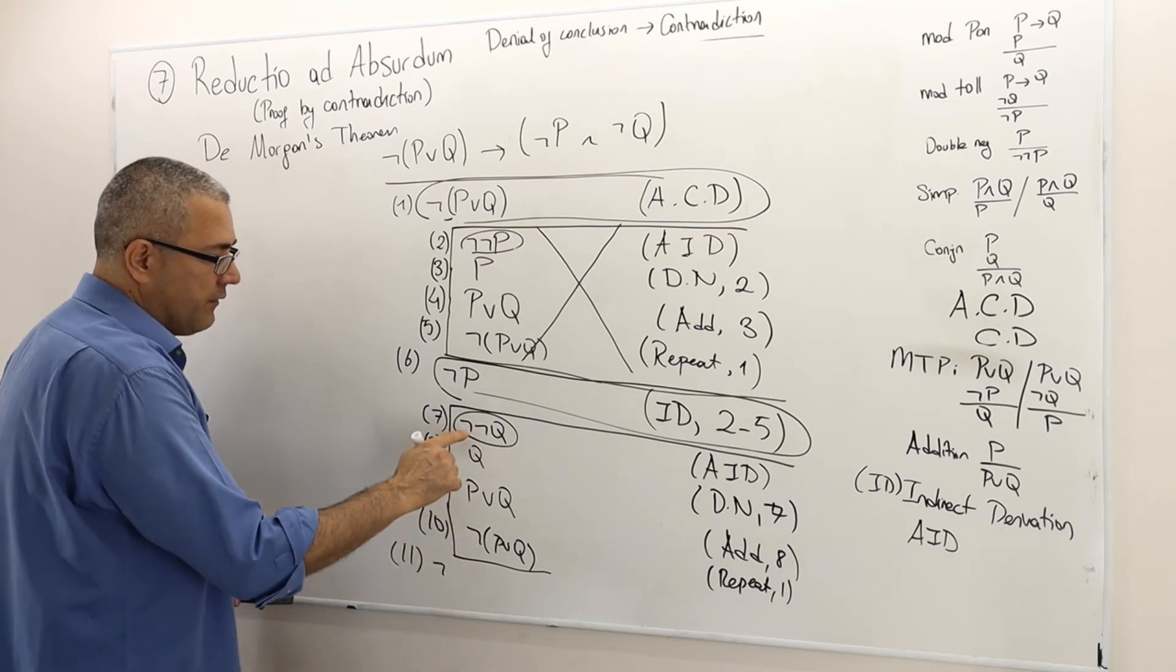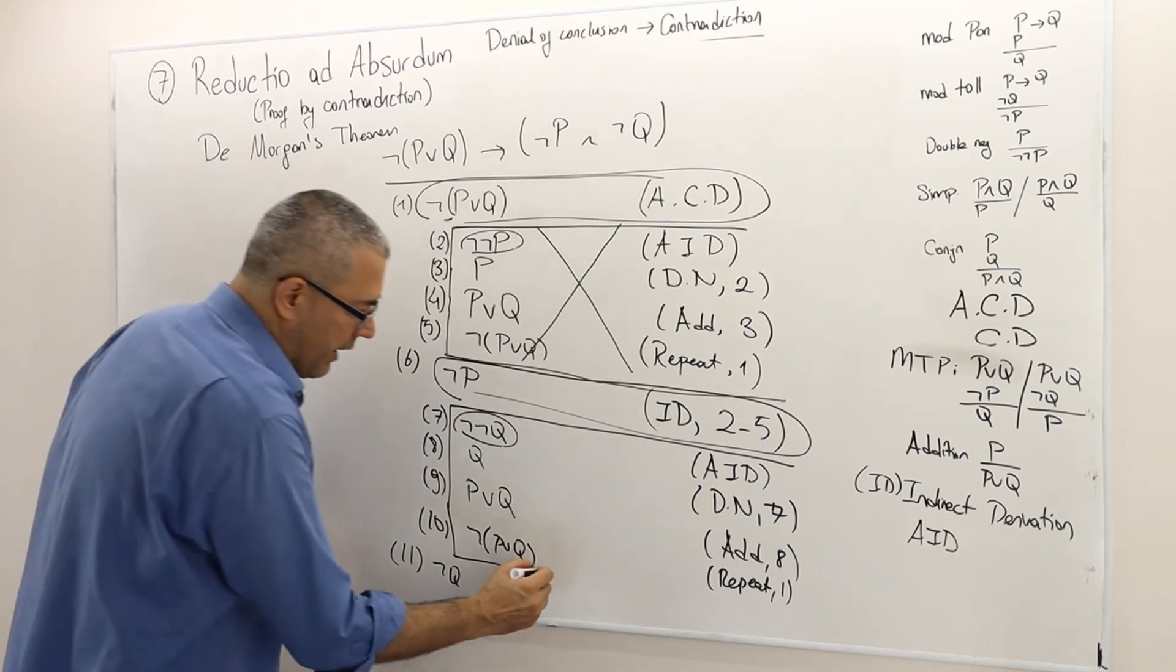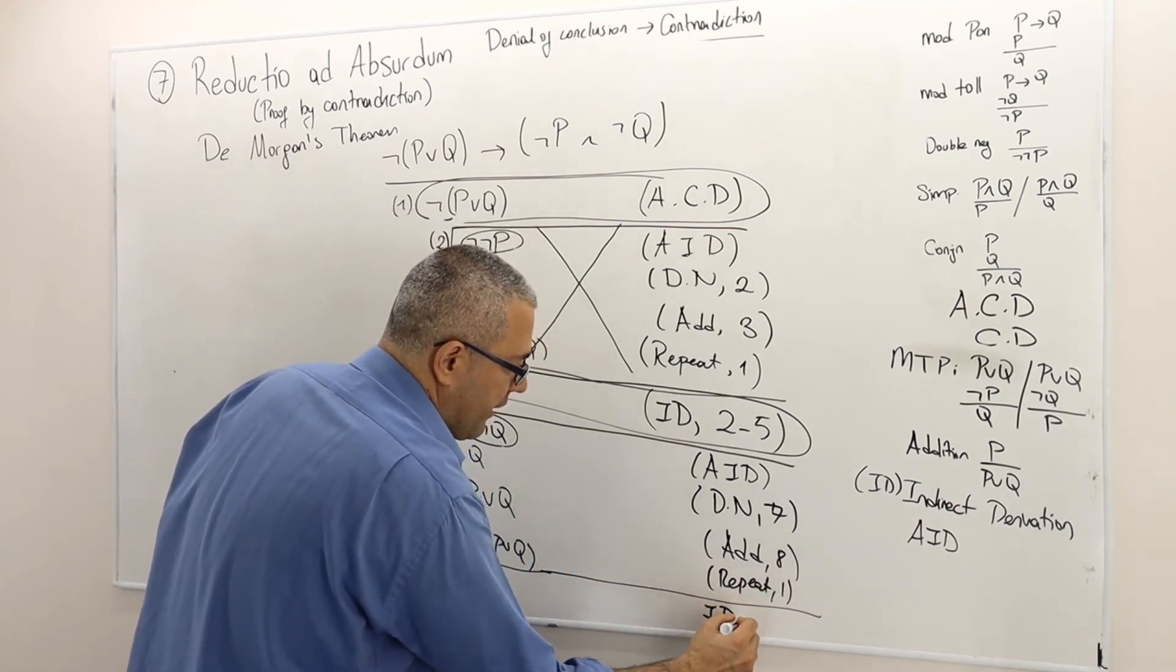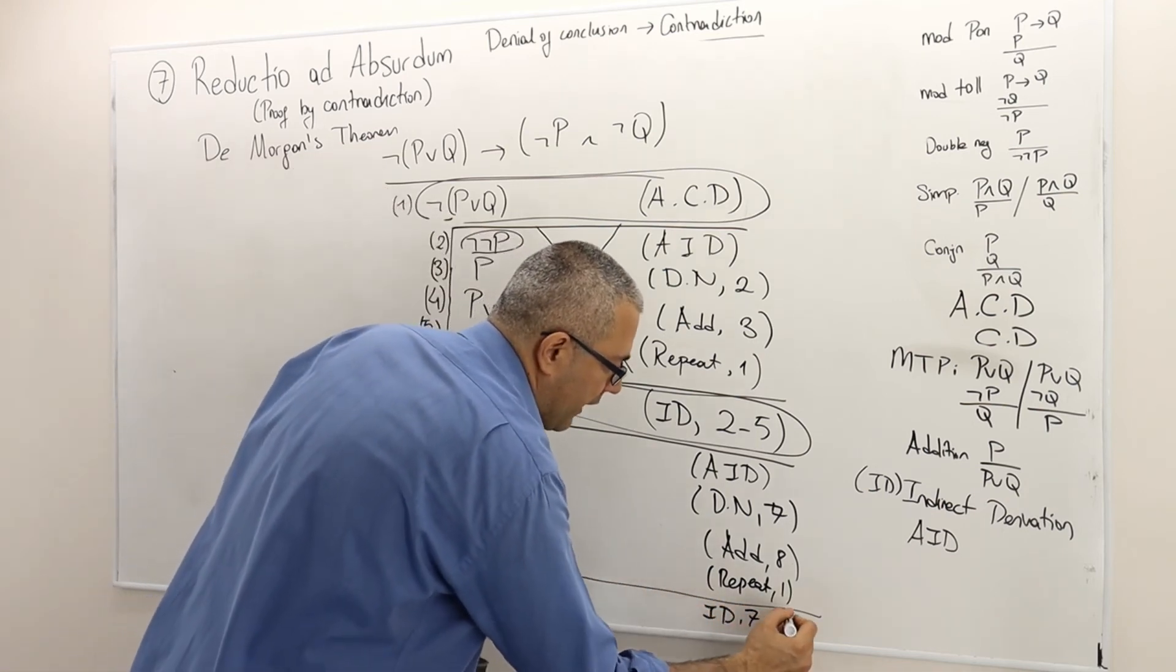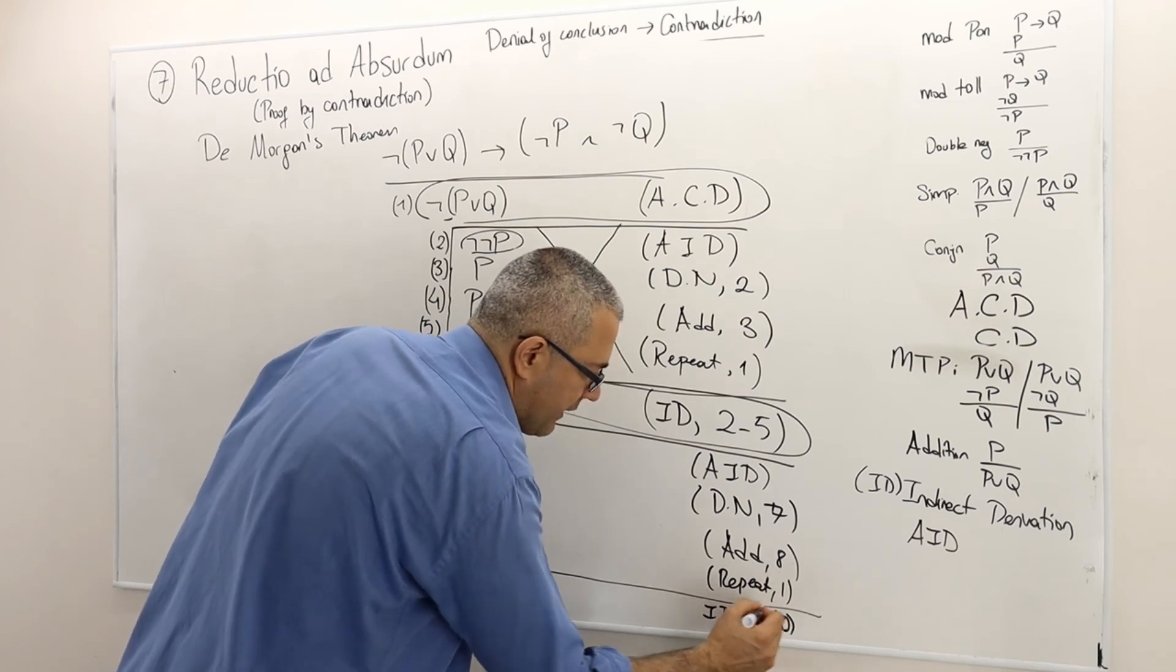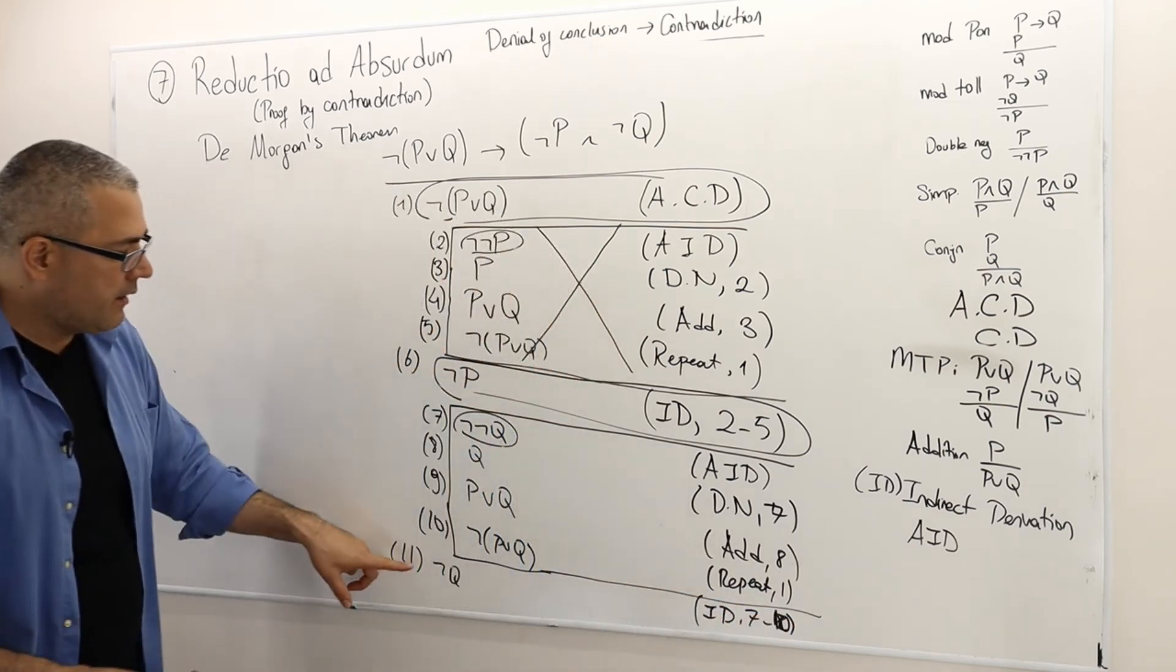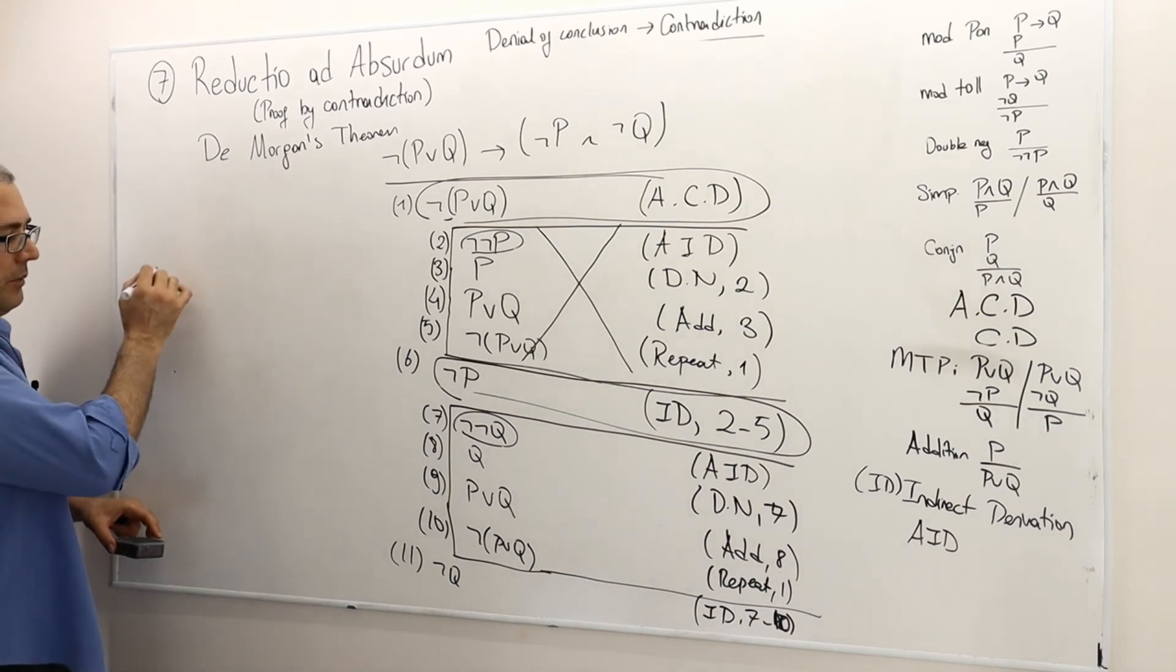And in line 11, if not not Q is false, then not Q must be true. And this is thanks to indirect derivation, thanks to the arguments between 7 to 10. So line 12, I already proved in line 6 that not P is true.